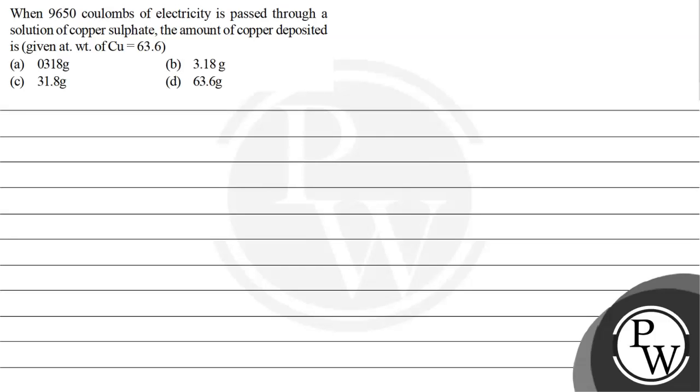Hello, let's see the question. The question says when 9650 coulombs of electricity is passed through a solution of copper sulfate, the amount of copper deposited is, and the given weight of copper is 63.6. So let's see the key concept here.